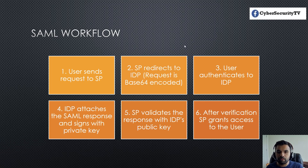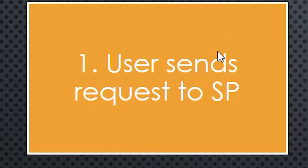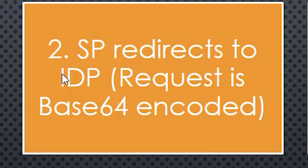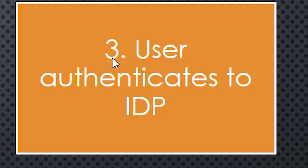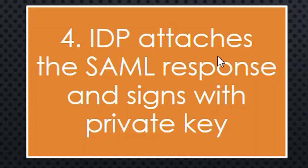So how the SAML workflow operates: first the user sends a request to the SP — in our example, abc.com. Then the SP redirects to the IDP, so abc.com redirects you to Gmail. Then the user authenticates to the IDP — so here you authenticate with Gmail. Then the IDP attaches the SAML response and signs it with a private key. So Gmail, when it confirms authentication, signs it — like a certificate your university signs — and sends it back to the service provider, abc.com.